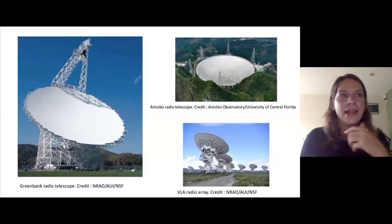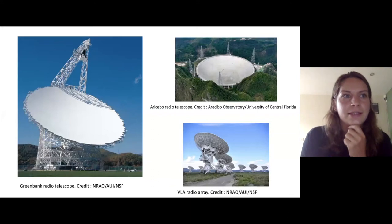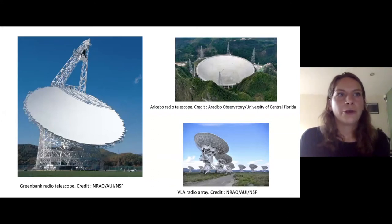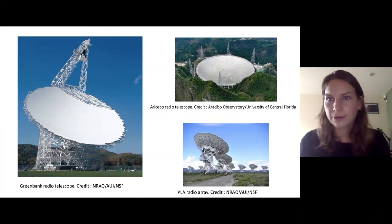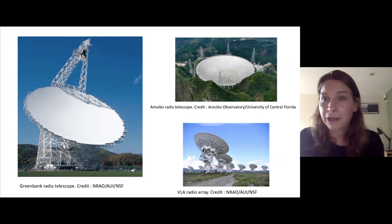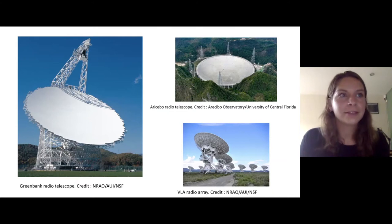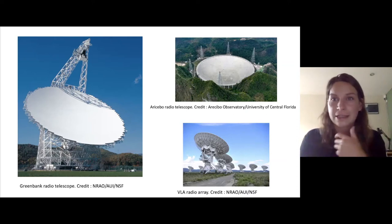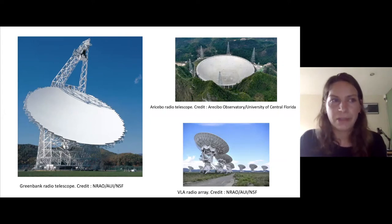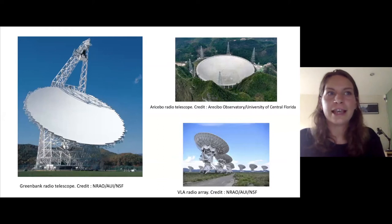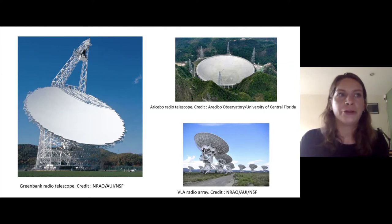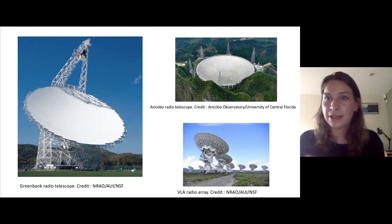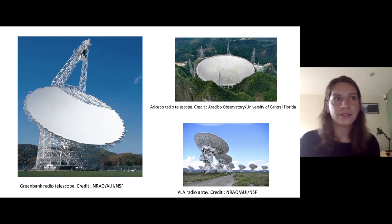Arecibo is about 300 metres wide — that's about as big as we can build. If you can't build bigger than 100 metres for a single steerable dish, what can we do? The solution comes in the form of building a telescope array: individual radio telescopes linked together to form one giant dish. The VLA is 27 individual dishes, each with a diameter of 25 metres — you link these together, combine the signals, and this forms one huge telescope.